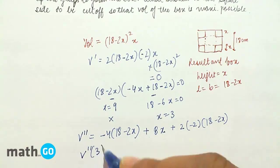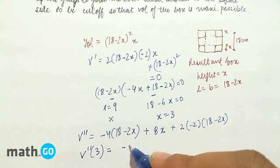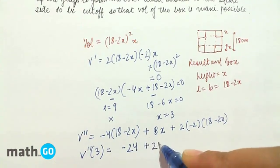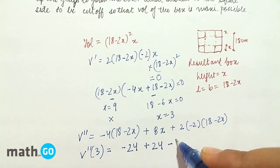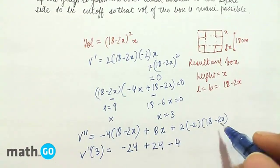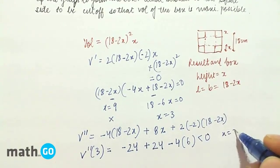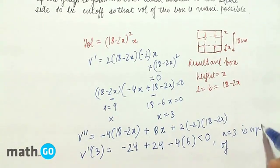So, V double dash of 3 equals to -24 + 24 minus 4 into 6. Since this is less than 0, x equals to 3 is a point of maximum.